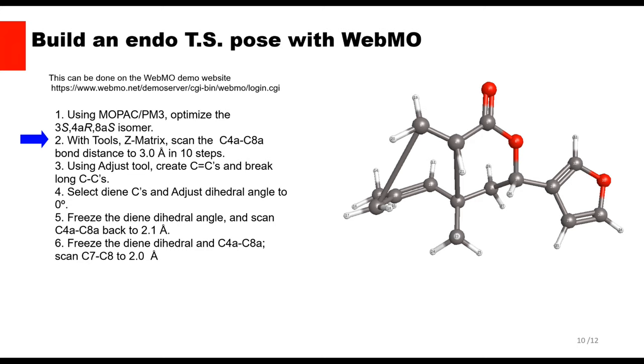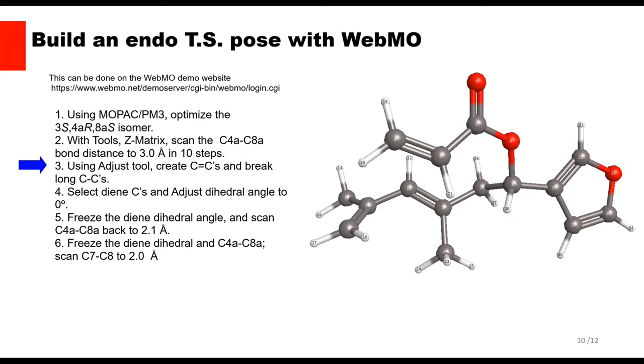Using the Adjust tool in the left-hand toolbar, select the long bond and hit Delete. Next, right-click the diene bonds to make two double bonds. Flatten out the diene.